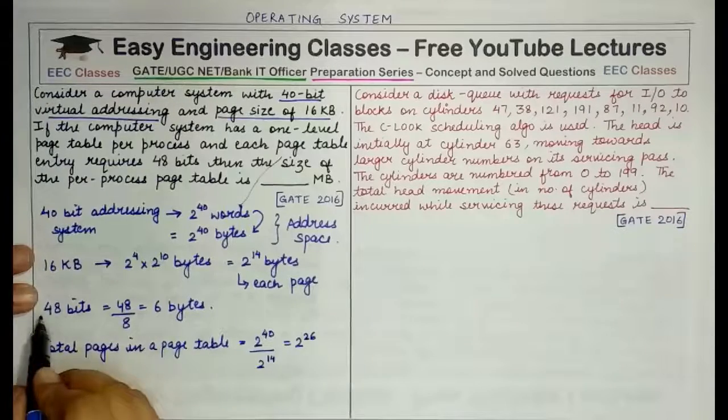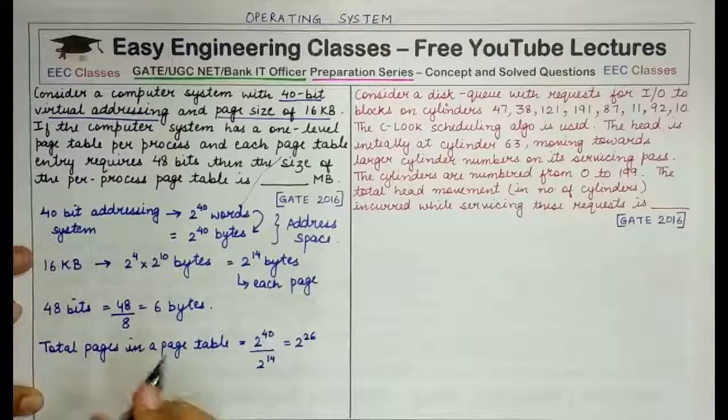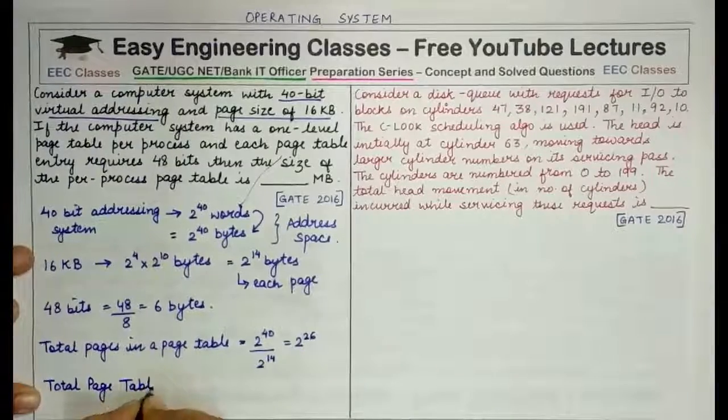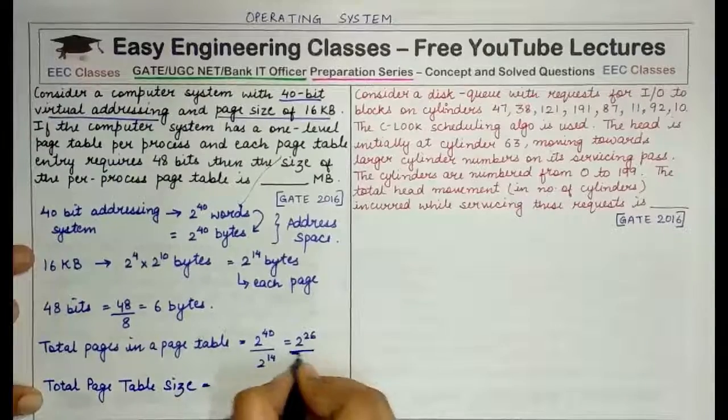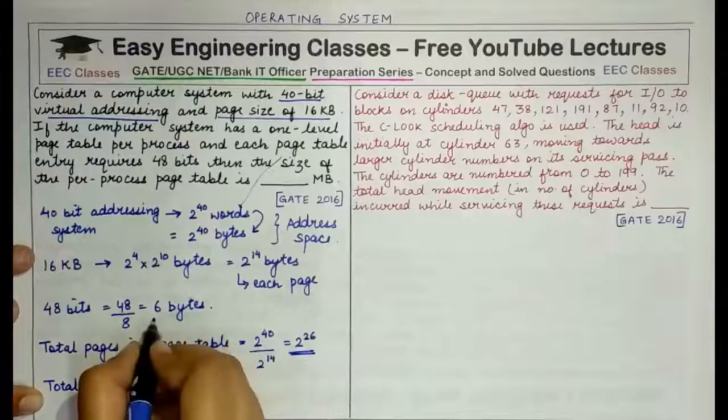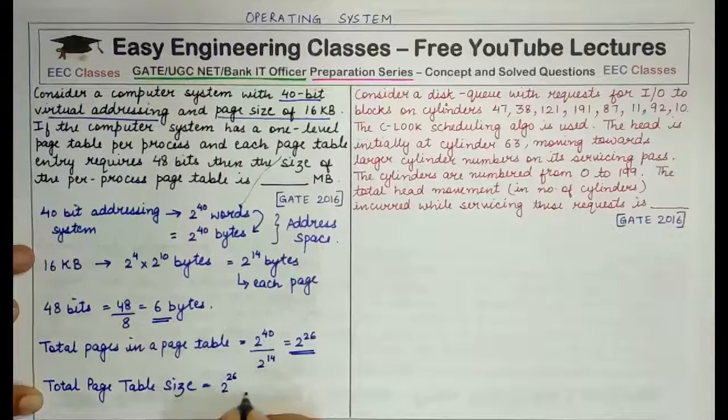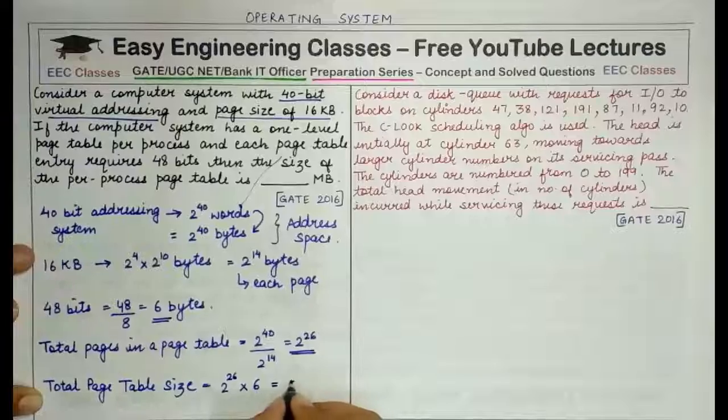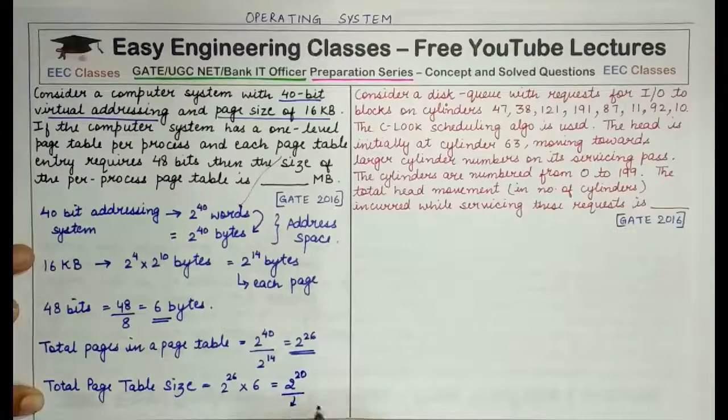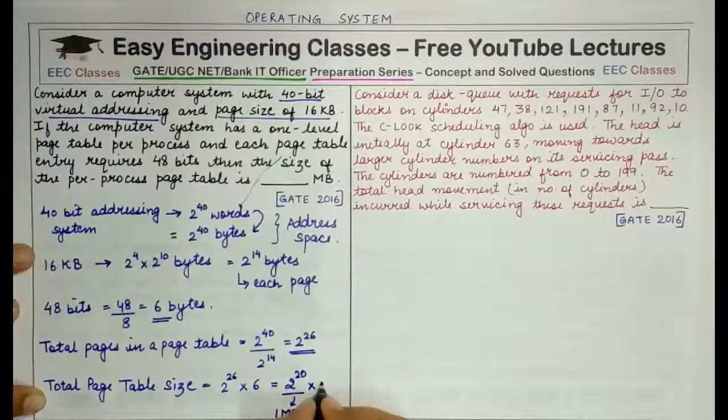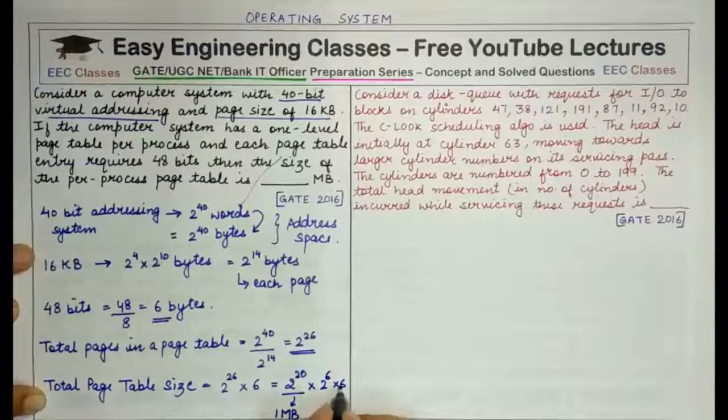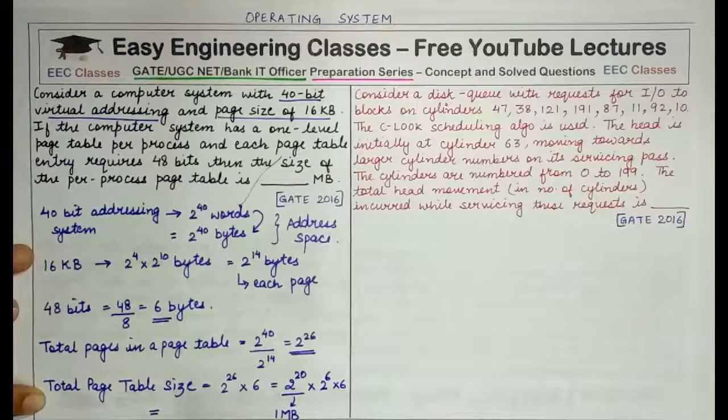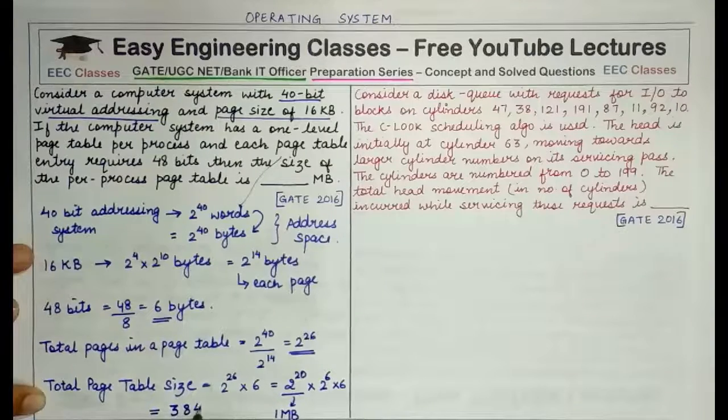Total number of pages in one page table is 2 raised to power 26. Now, within each page table, we know that each entry requires 6 bytes. So the total page table size is the number of entries which is this multiplied by the amount or the size of each entry which is this. So 2 raised to power 26 multiplied by 6 bytes and since we have to tell the answer in MBs, converting it into MBs, 2 raised to power 20 is 1 MB multiplied by 2 raised to power 6 coming from this 26 multiplied by 6. This total value when you calculate, 2 raised to power 6 is 64, 64 into 6 would give you 384. So 384 MB would be the answer.